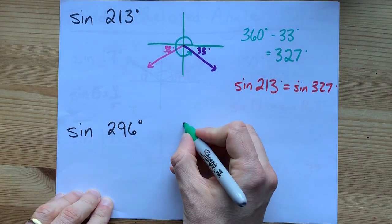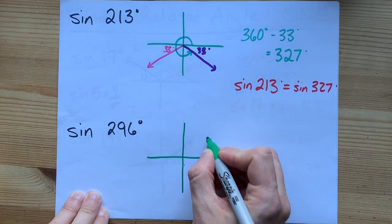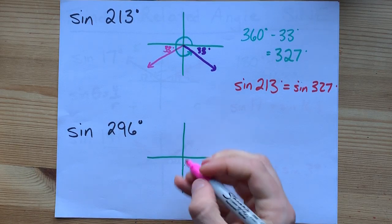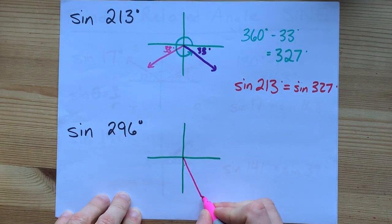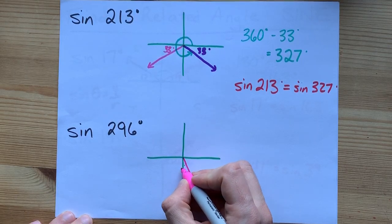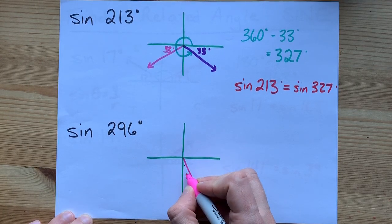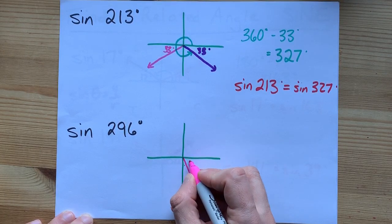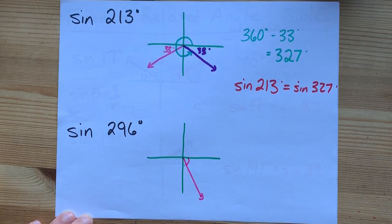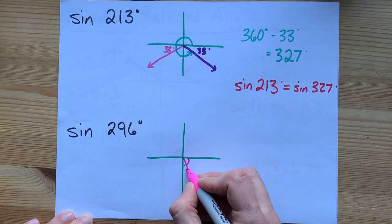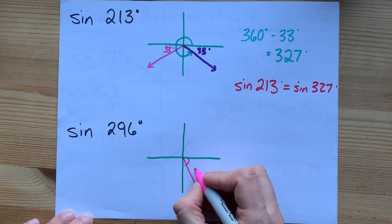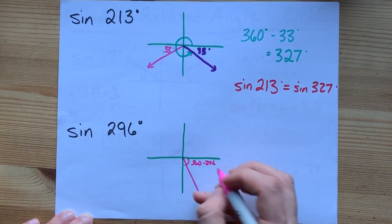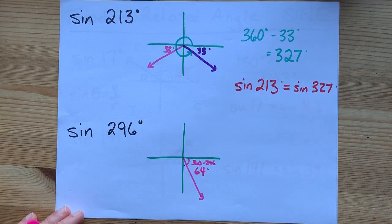Last one together, the sine of 296. If this is 0 degrees, 90, 180, 270, we're going even past that. We must be landing here. Now, if this is 270, we've gone 26 degrees past that. But we always label our angles from the positive x-axis. How big is this? Well, this is 296. So how far short of 360 are we? 360 minus 296 gives me an answer of 64 degrees. Cool.